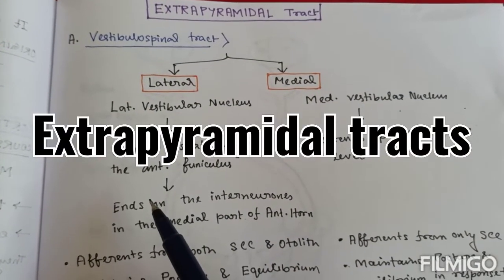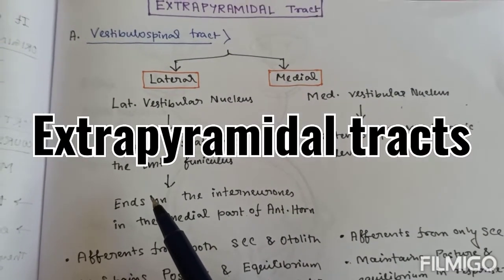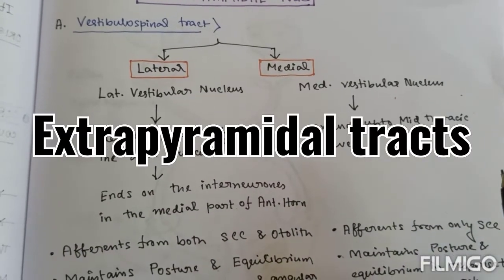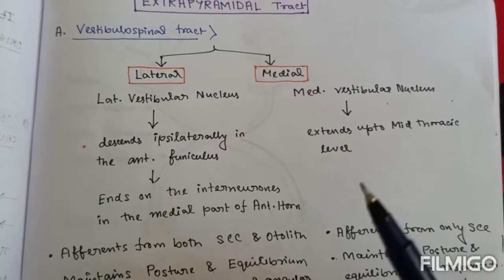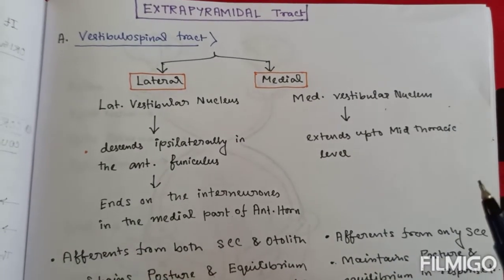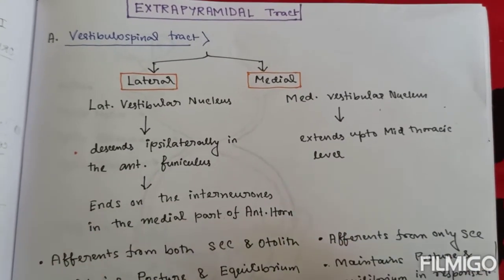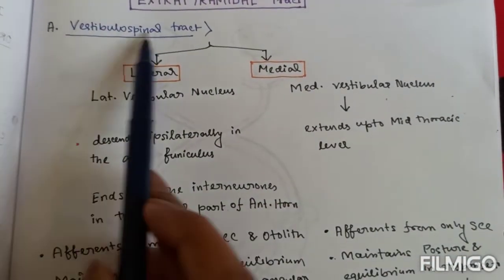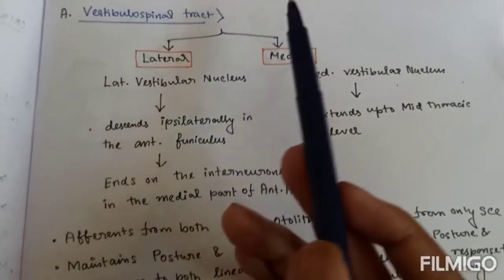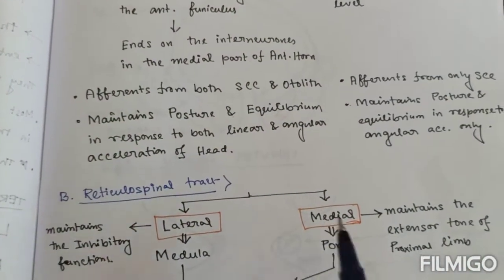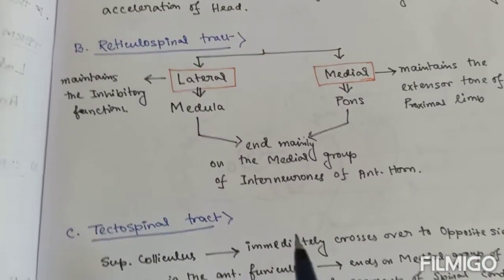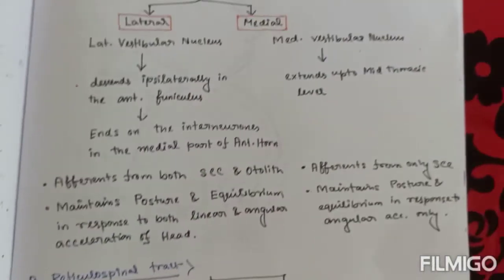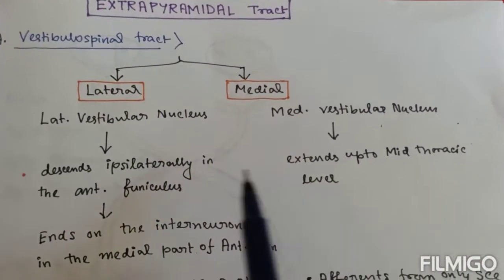Hello everyone, welcome to another video of this revision series. In this video we will talk about extrapyramidal tracts. In the previous video we talked about pyramidal tracts; these are tracts other than the pyramidal tracts, hence the name. They mainly include the vestibulospinal tract, reticulospinal tract, tectospinal tract, and rubrospinal tract.